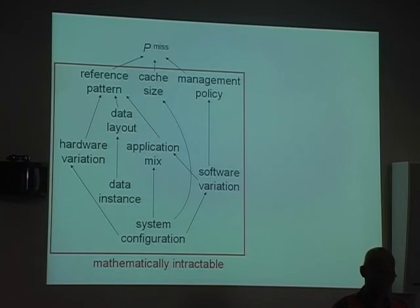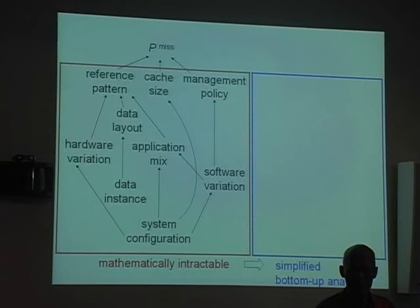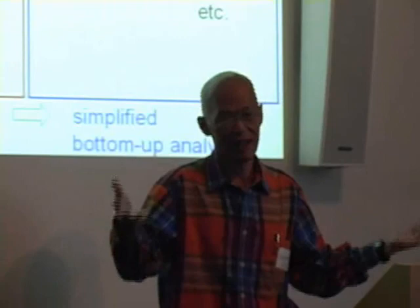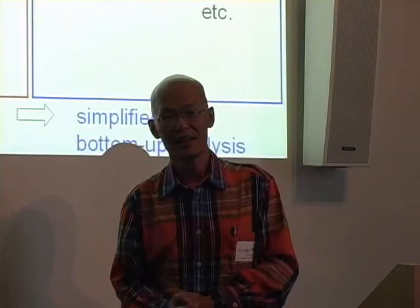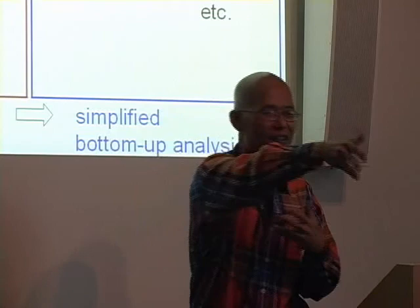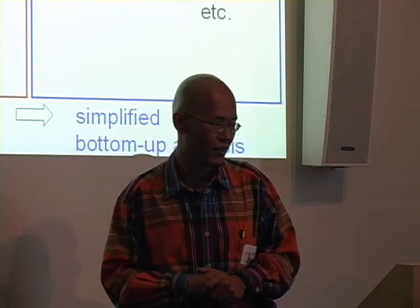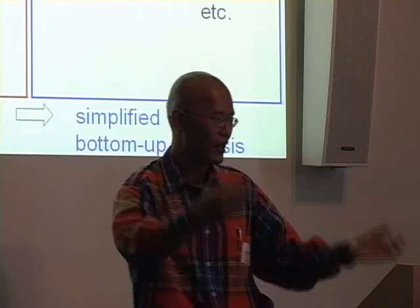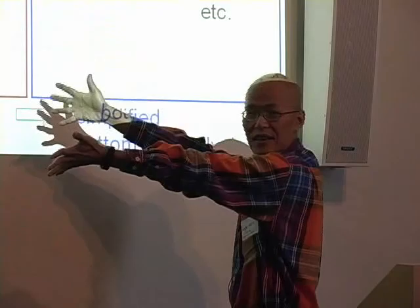So what have people been doing? What they do is bottom-up analysis. They start off with very simple assumptions: they fix on some idealized replacement policy like LRU, assume there's no prefetching, assume independence in the reference pattern, maybe just one process. You simplify and simplify, which makes the interaction much simpler and you can write your equation. Of course, the question is: you have this reality and this model — how close are you to the reality?